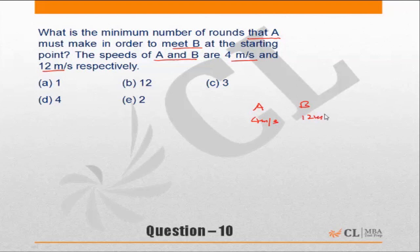The speeds of A and B are 4 meters per second and 12 meters per second. In other words, the ratio of speeds is 1 is to 3. If the ratio of speed is 1 is to 3, the ratio of distance will also be 1 is to 3.